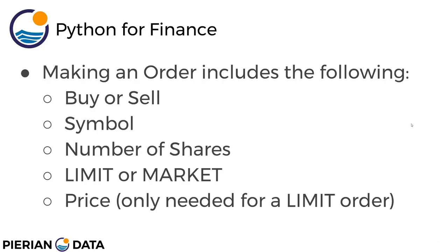First off, you need to indicate whether you want to buy the stock or sell the stock. The next thing is to say what stock you want to buy or sell — that is the actual symbol. For example, for Apple stock you would input AAPL. Then the next piece of information needed is the number of shares: how many shares of Apple do you actually want to buy or sell?